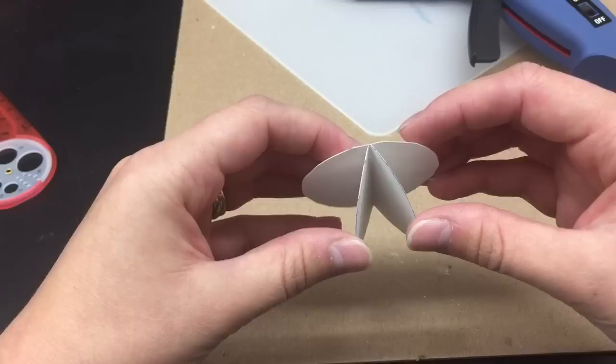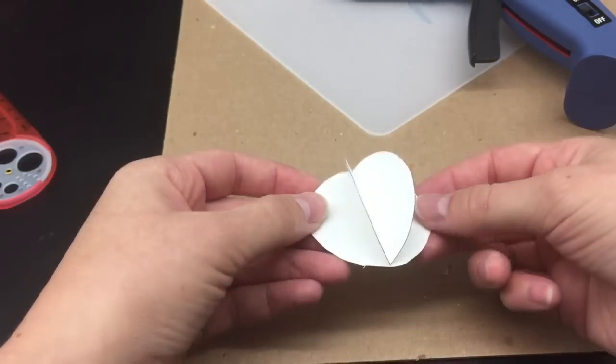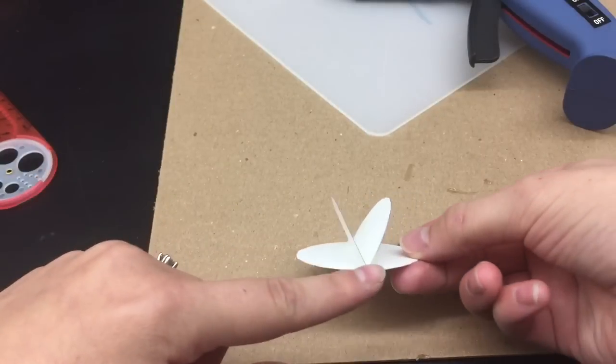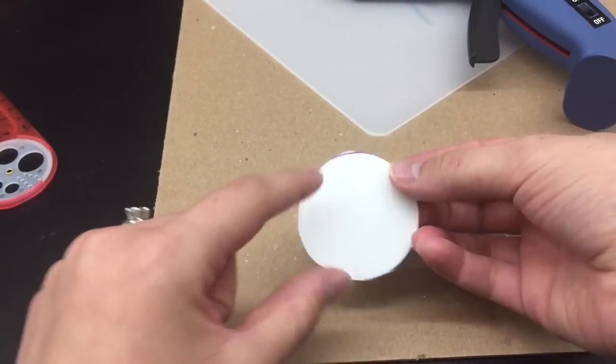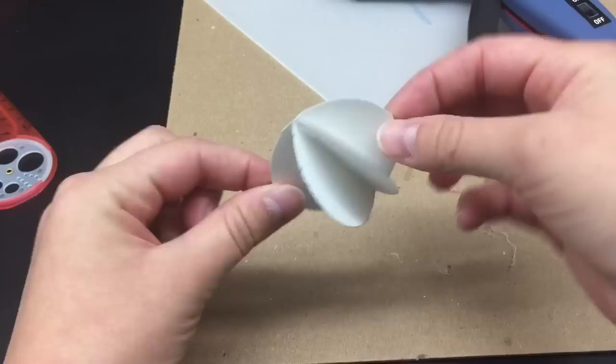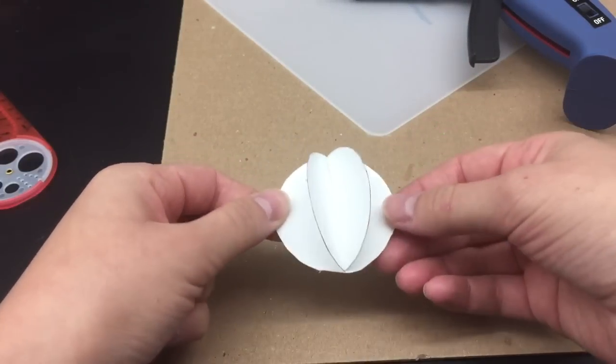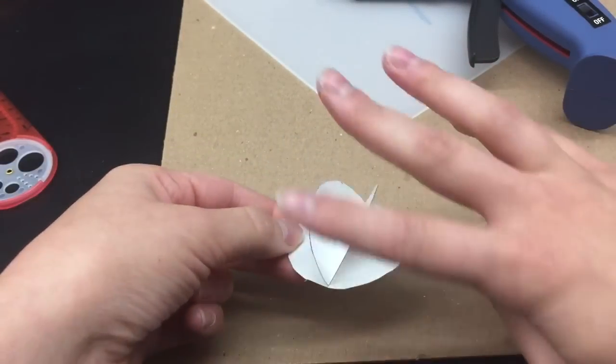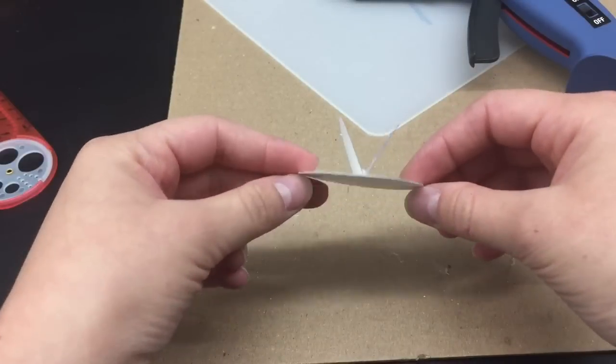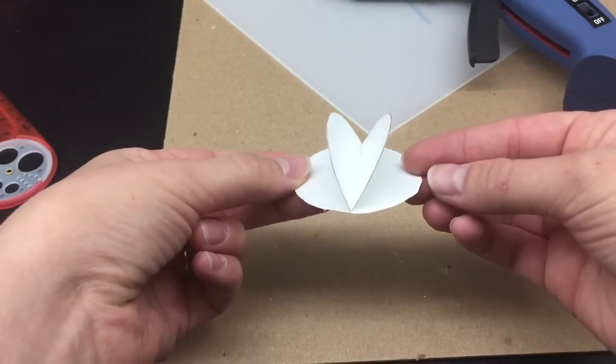If you do the same thing on the other side with two halves, then you would have a whole ball. Then you could cover the edges with something to create that illusion that it is round. And that's how you make the half of a ball.